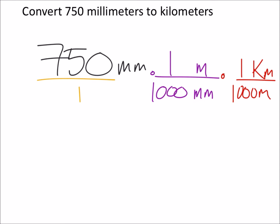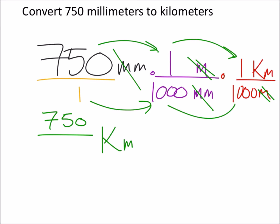Again, I can look at this as fraction multiplication where we're going to cancel out our millimeters and our meters so that we end up with just kilometers. And I've got 750 times one times one, which would be 750, and then in the denominator I've got one times one thousand times one thousand, which would be this very large number, one million.